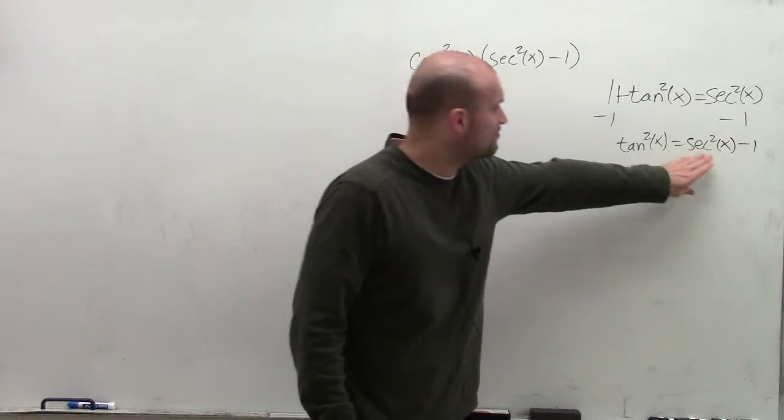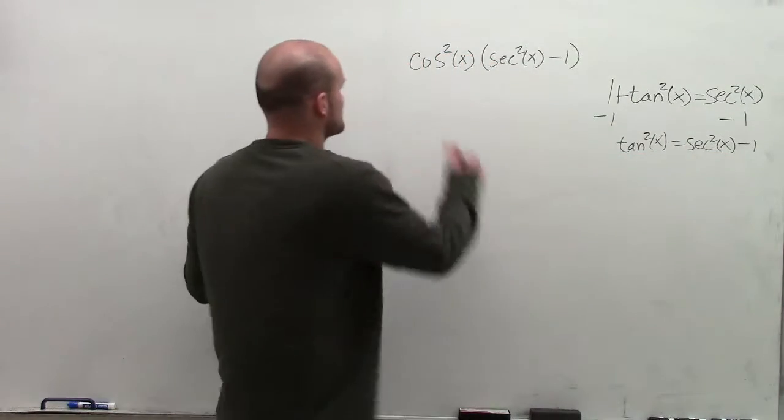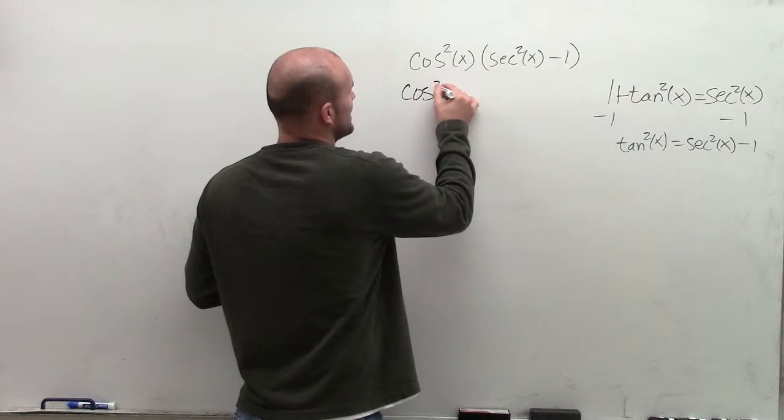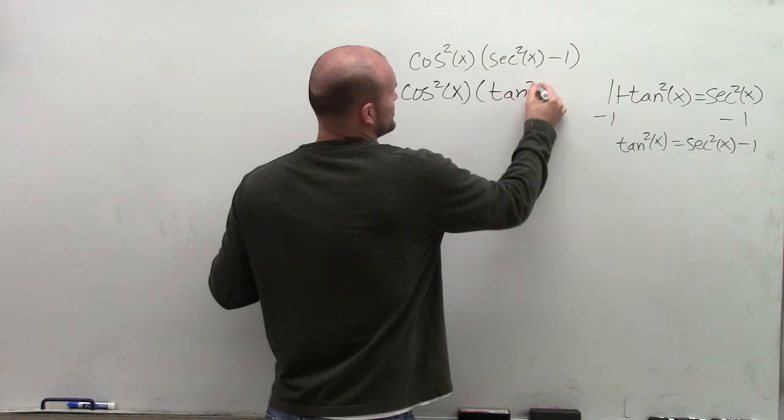So that's important because I can now replace secant squared of x minus 1 with tangent squared of x. Therefore, I'll write cosine squared of x times now the tangent squared of x.